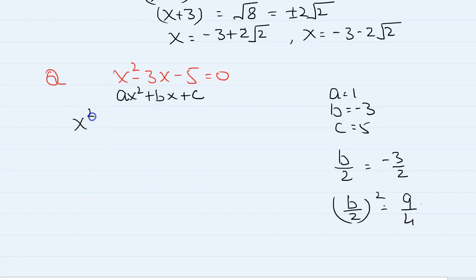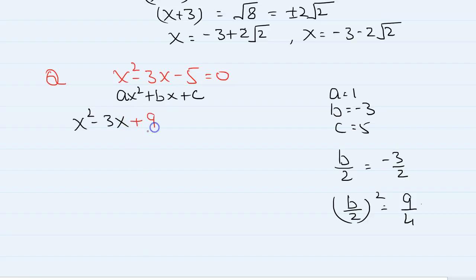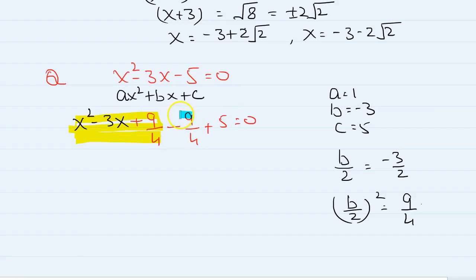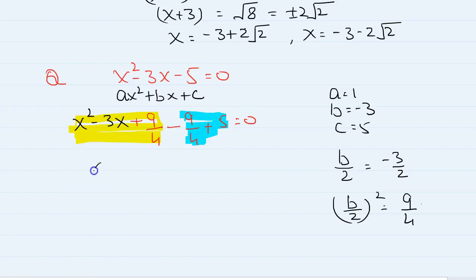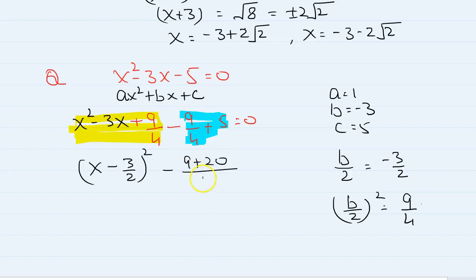So we add and subtract 9 over 4. It will be x squared minus 3x — we always add this first — plus 9 over 4, and then we subtract 9 over 4, minus 5 is equal to 0. Now we make two groups: the first is x squared minus 3x plus 9 over 4, which we know is x minus 3 over 2 squared.